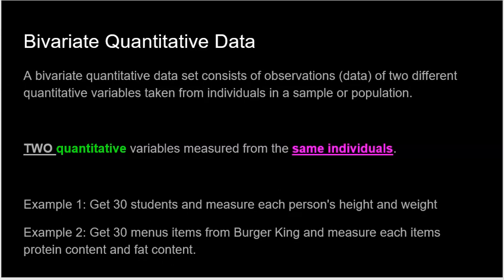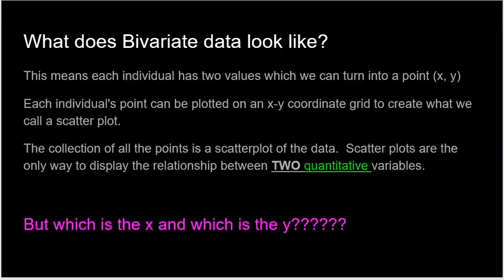So the key here is that there's two quantitative variables measured from the same individuals. Have I repeated that enough? I hope so, because it's an important point that a lot of kids mess up. So here's an example. Get 30 students and measure each person's height and weight. So I'm going to have 30 data points. Every data point is going to have a height and a weight. Get 30 menu items from Burger King and measure each item's protein content and fat content. So I'm going to have 30 data points. Each data point is going to be an item from Burger King, a Whopper, for example, how much protein's in that Whopper, how much fat's in that Whopper.